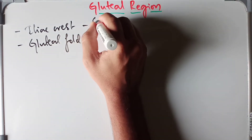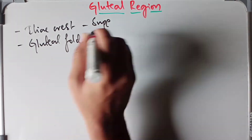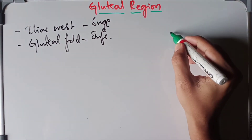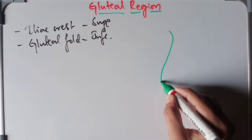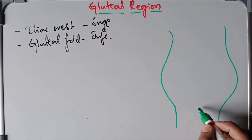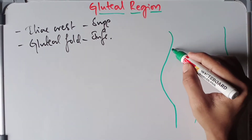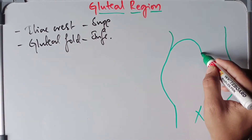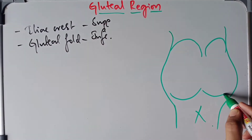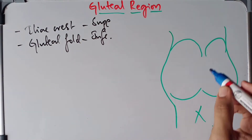The iliac crest is the superior attachment and the gluteal fold is the inferior attachment. When you look at the back of the human body, you can see the boundary of the iliac crest on either side, and then we have the gluteal fold below.